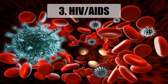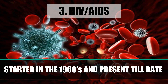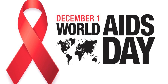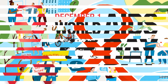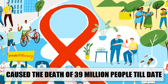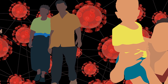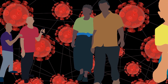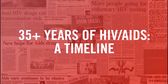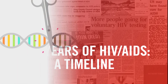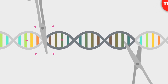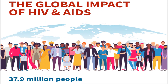HIV/AIDS. This virus started in the 1960s and is present to date. The disease was at its peak in the 1980s when the world was first informed about HIV. Up to today, the virus has caused the death of 39 million people worldwide. It was first believed that the virus was spread only by same-sex intercourse; however, in 1983 it was discovered that transmission also occurred via heterosexual activity as well as blood transfusion methods.